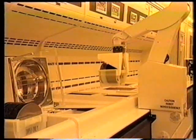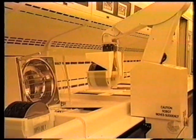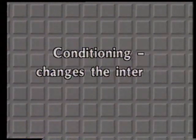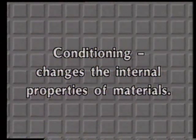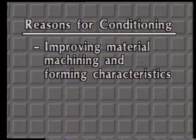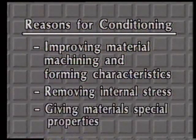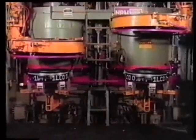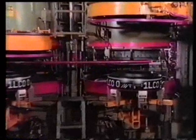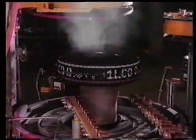So far we've talked about the first kind of secondary processing of materials — changing size and shape. The next kind is conditioning. Conditioning is used to change the internal properties of materials, such as making them stronger, harder, tougher, and more or less elastic. The reasons for conditioning include improving material machining and forming characteristics, removing internal stress, and giving the material special properties. One example of a material that is heat-conditioned is raw rubber. Using a process called vulcanization, or heat curing, raw rubber is made both strong and flexible for products like tires and boots.